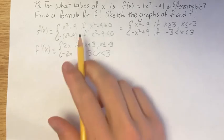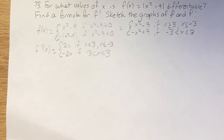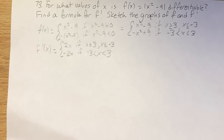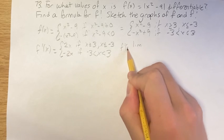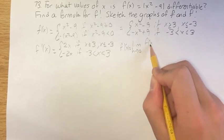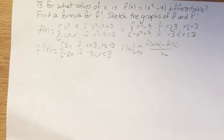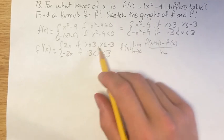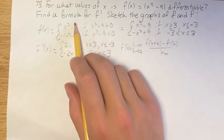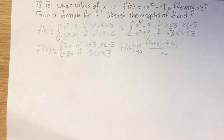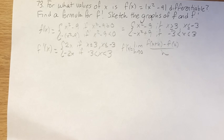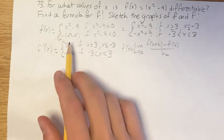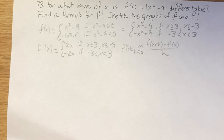Looking for what values the function is differentiable — that is, where does the derivative exist. Traditionally you would do this by taking the definition of a derivative: the derivative of x is equal to the limit as h approaches 0 of f of x plus h minus f of x over h, taking that limit as you're approaching from the left and from the right. For negative 3, approaching from the left you'd be using one piece of the function, and from the right the other piece. If the left-hand and right-hand limits equal each other, then you know it's differentiable.